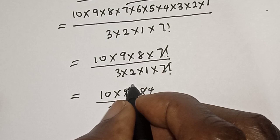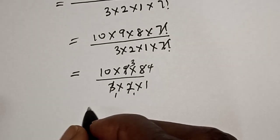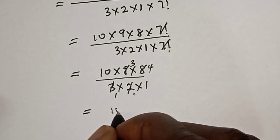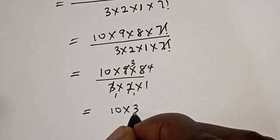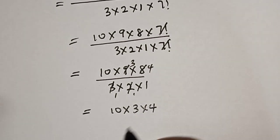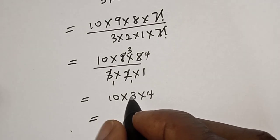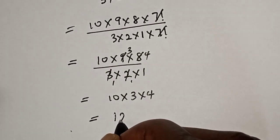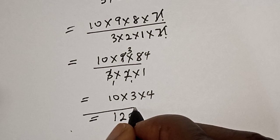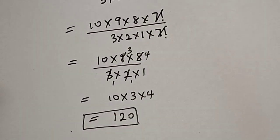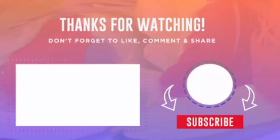This is equal to 10 times 3 times 4, which is equal to 10 times 3 equals 30, times 4 equals 120. And this is our final answer. If you enjoyed the class, please don't forget...